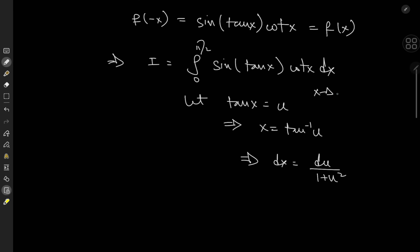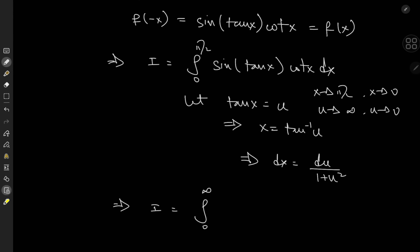As x approaches pi over 2, we have u approaching infinity, and as x approaches 0, we have u approaching 0 as well. So our target integral transforms into the integral from 0 to infinity of sine of u times 1 over u, with the du over 1 plus u squared term.